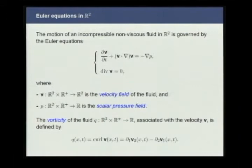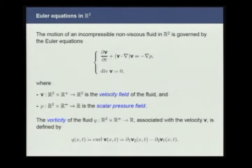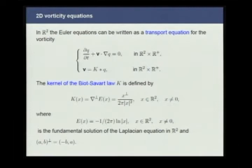Let's first consider the incompressible Euler equations in the whole plane. Here V is the divergence-free vector field and P is the pressure. In our analysis, it will be extremely useful to consider the vorticity of the fluid, which is defined as the curl of the velocity. In R2, the Euler equations can be written as a transport equation for the vorticity. The divergence-free velocity field can be recovered from the vorticity using the Biot-Savart law, where K is the kernel, defined as the grad-perp of the fundamental solution of the Laplace equation in R2.